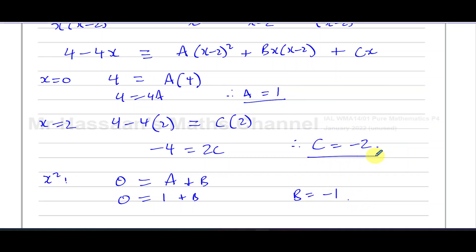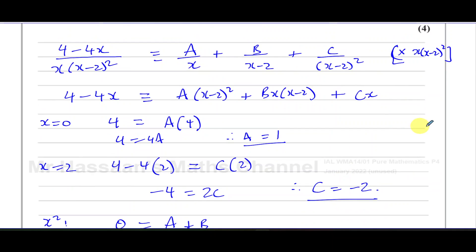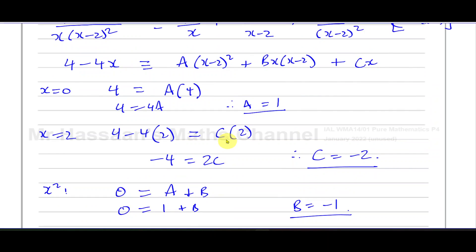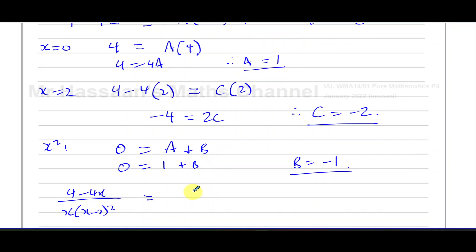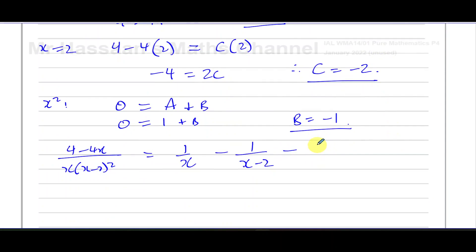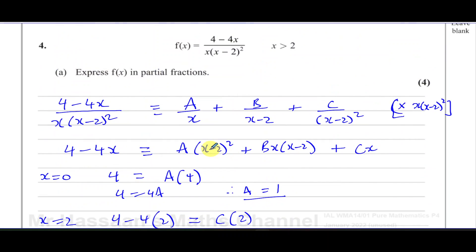So we have A equals 1, B equals negative 1, C equals negative 2. We can now rewrite 4 minus 4x over x times (x minus 2) squared as 1 over x, minus 1 over (x minus 2), minus 2 over (x minus 2) squared. That is the answer to part A.